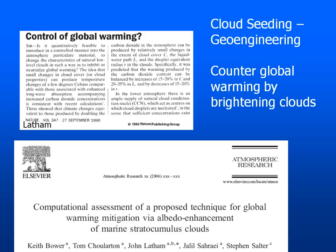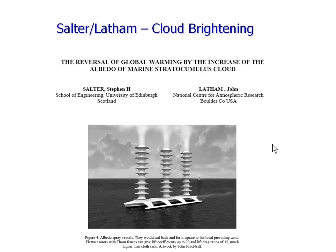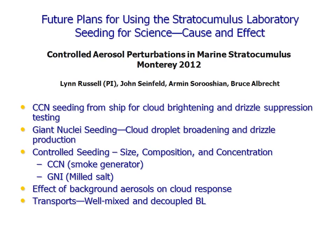Cloud seeding has also been suggested as geoengineering — the idea is to add CCN and brighten these clouds. The clouds most susceptible to this would be stratocumulus and other marine clouds. The idea is that droplets would be produced through fine sea spray, which would serve as the source of CCN to brighten the clouds. While there are many aspects of this issue that need to be looked at very critically, stratocumulus clouds do give us an opportunity to do that.